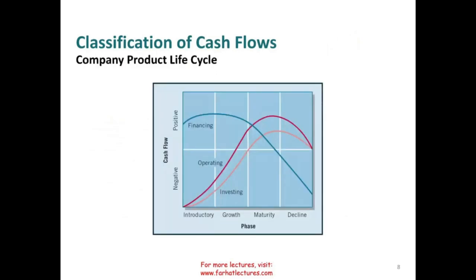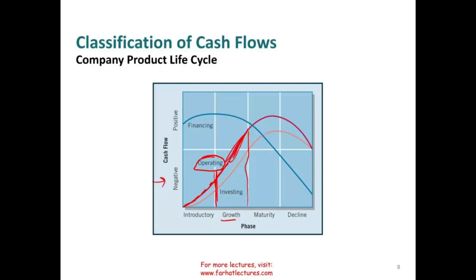Now let me show you a picture to expand your horizon about the cash flow statement. This shows the phases of a company: introductory, growth, maturity, and decline. When the company starts to operate, they may have negative operating cash flow in the introductory phase. As they grow, they become cash positive, and at maturity they max their cash. Then as the company declines, operating cash flow goes down.